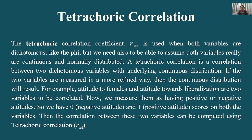Tetrachoric correlation is used when both variables are dichotomous, like phi, but we also need to assume both variables really are continuous and normally distributed. जब तक आपको continuous variable क्या है और normal distribution क्या है ये नहीं पता होगा, आप इसको सिर्फ रट सकते हैं — और रटने पर आपका वो ज्ञान साथ नहीं देगा।